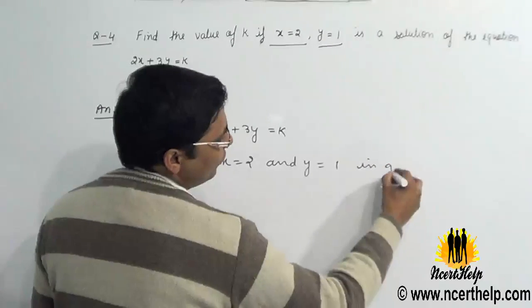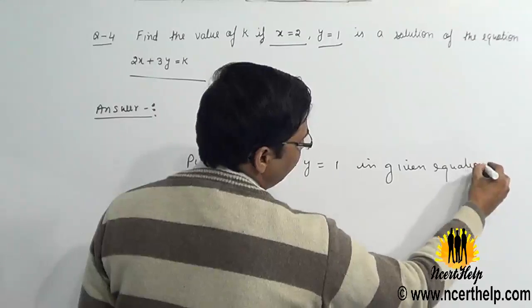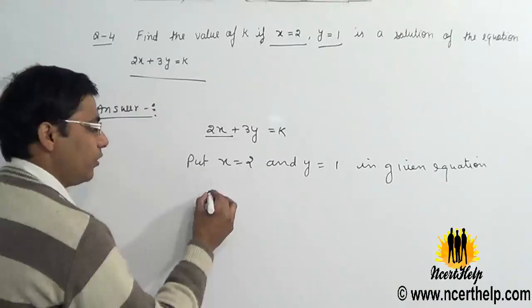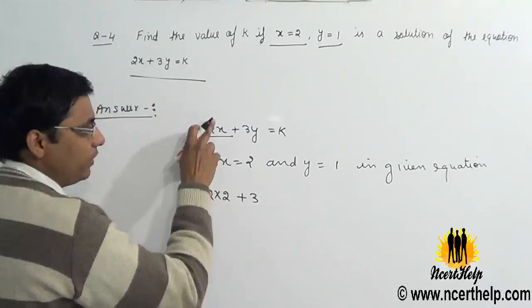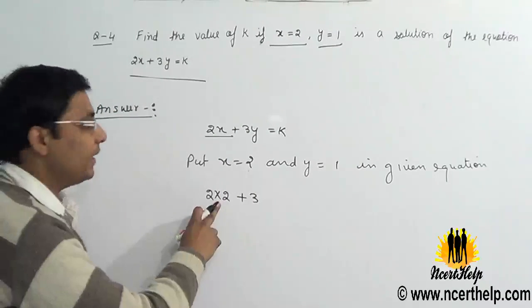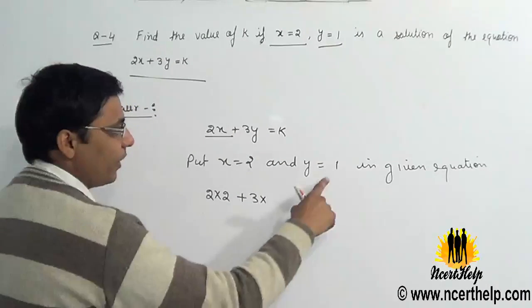Here 2, what is the value of x? x is 2. There is no sign between 2 and x, so we write multiply there. 3y, 3 times of y. So times, what is the value of y? It is 1, equals k.